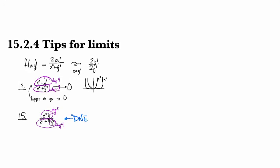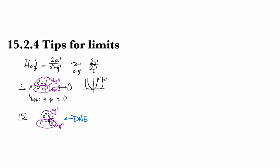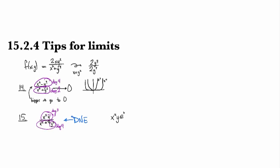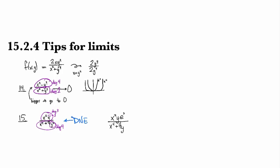And then if you actually check in the book, you'll see that I lied a little here. 15 is actually x²y e to the y over x⁴ plus 4y².